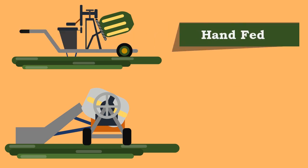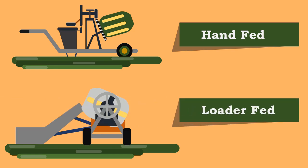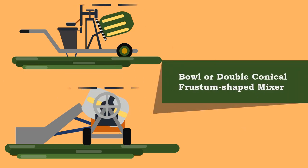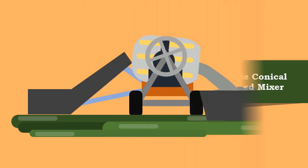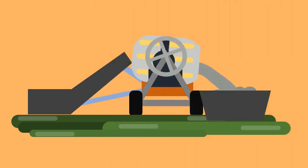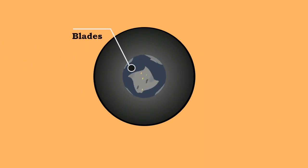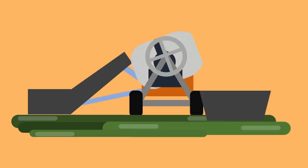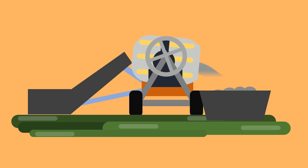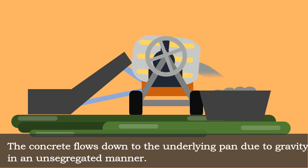The tilting mixers are generally made with hand fed or loader fed. They consist of a bowl or double conical frustum shaped drum which can be tilted for discharging concrete. The blades are fixed inside the drum, and this revolving drum with the mixing blades mixes the ingredients fed to it, discharging the mixed concrete from the open end at the top when tilted downwards. The concrete flows down to the underlying pan due to gravity in an unsegregated manner.